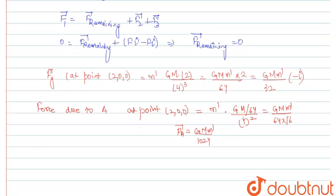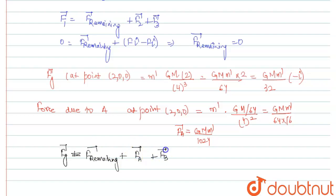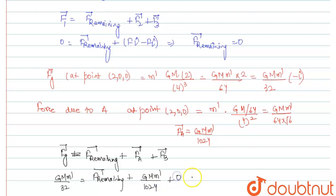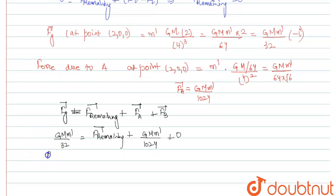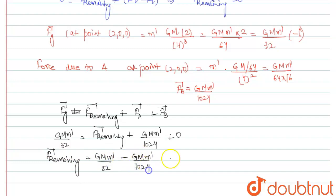To find the force due to the remaining part at point B(2,0,0): F_G (complete sphere) = F_remaining + F_A + F_B. We have F_G = G·M·m′ / 32, F_A = G·M·m′ / 1024, and F_B = 0. Therefore the force due to the remaining part equals G·M·m′/32 − G·M·m′/1024, which is not equal to 0. So the gravitational force at point B is not zero.